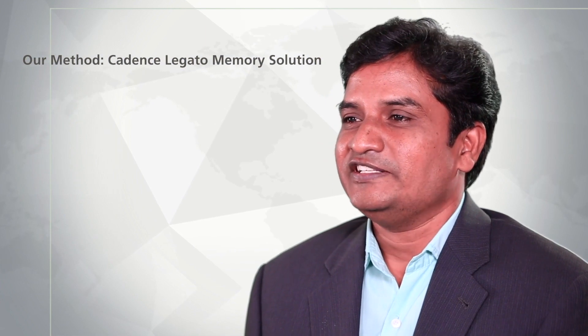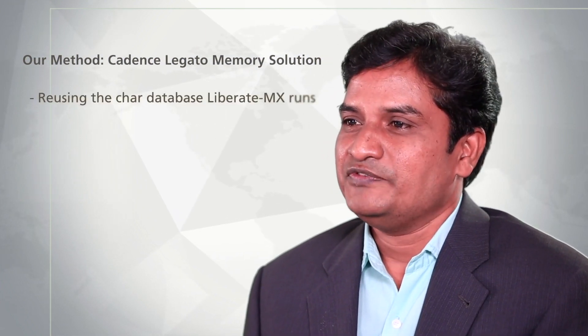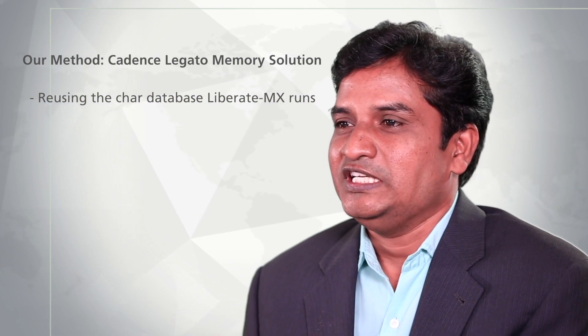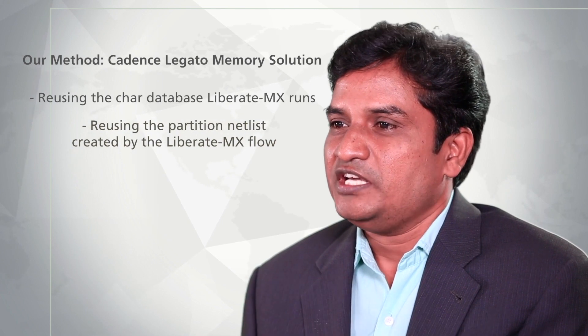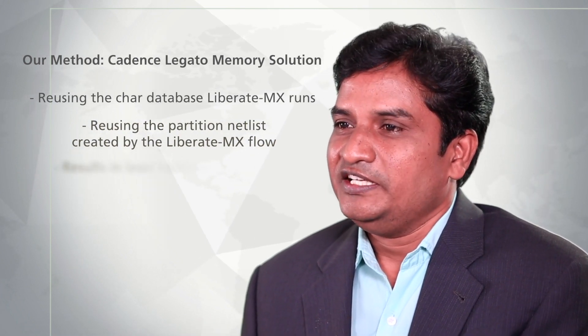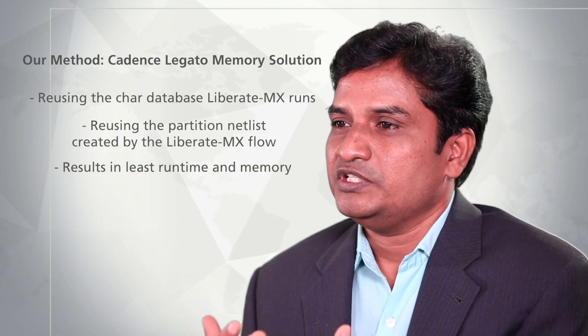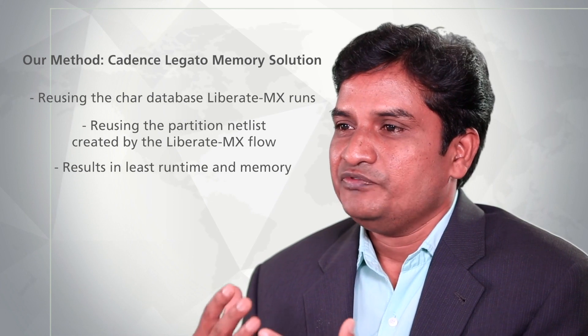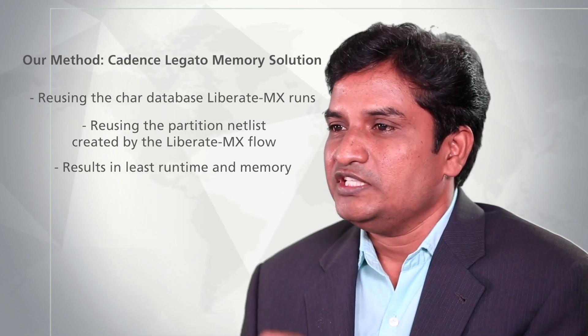This is the problem we want to address. Our method of generating the AOCV model completely relies on Legato memory solutions, specifically LiberateMX with Spectre simulation. Our characterization uses the LiberateMX flow, which is very efficient with minimal effort in setup. It has built-in intelligence for identifying the dynamic partition and the activity factor. It does a fast pre-simulation to identify the path which is actually active and toggling, and uses the accurate Spectre simulator to provide the dot-lib output.